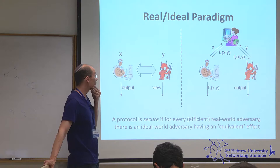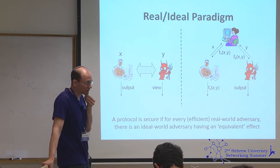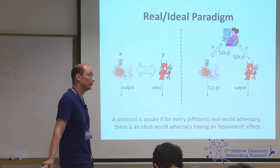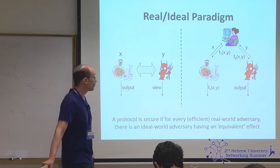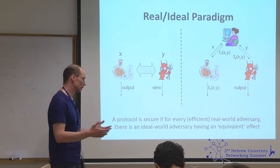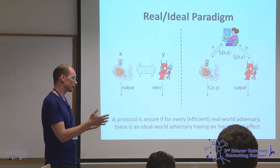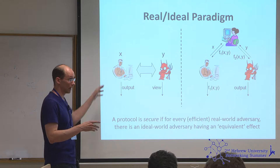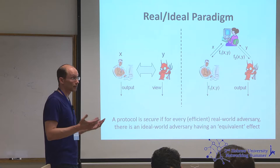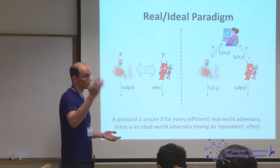In general, adversarially supplied inputs are a potential problem — not unique to secure computation but to any protocol with adversarial inputs. There are settings where it doesn't matter or you can account for it. For example, if they're running a secure auction and the attacker bids a million dollars, it's going to be stuck paying a million dollars — just like in the real world, if you bid a lot in an auction you have to pay the result afterward.